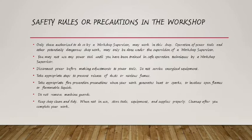Rule six: do not remove machine guards — all those things used to guide our machines must always be in place each time we are using them. Rule seven: keep the workshop clean and tidy. Any liquid that can cause slipping, or anything that can cause damage in the workshop, must not be left there. Always make sure your workshop is clean — it is very important.